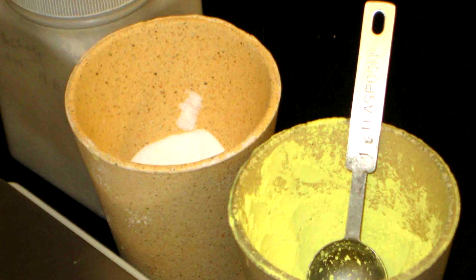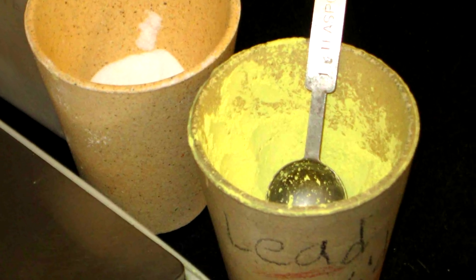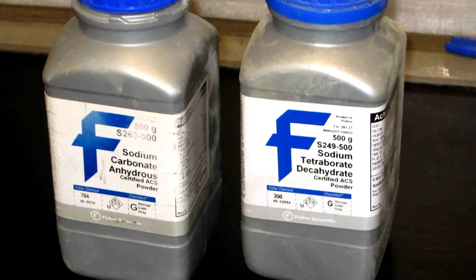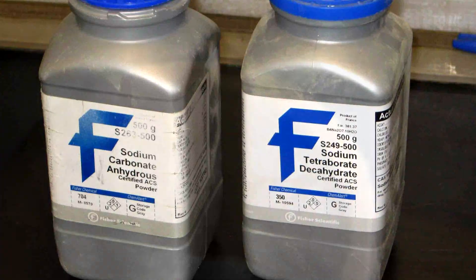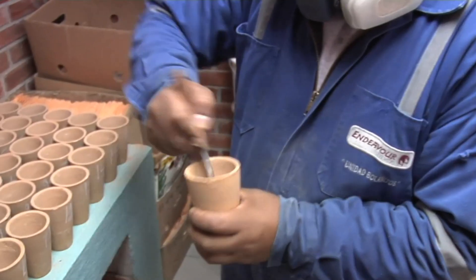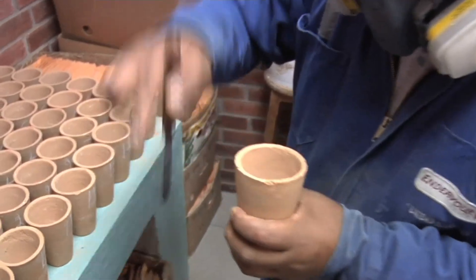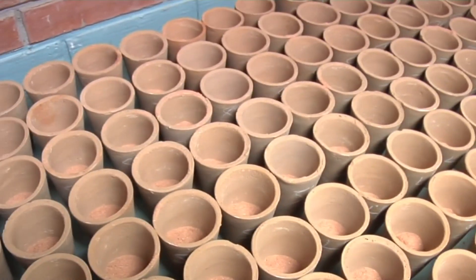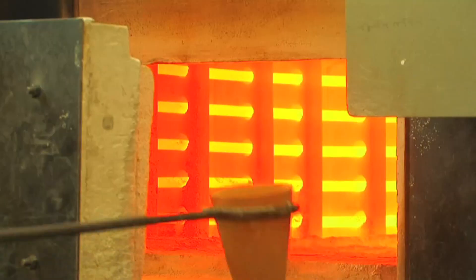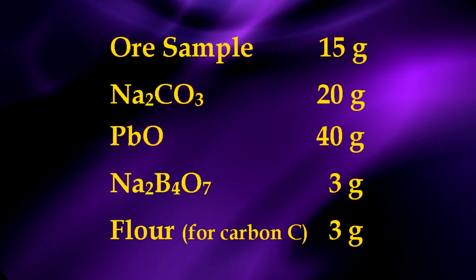The chemicals used in the fusion process each have a specific function. Activity and viscosity are the important chemical and physical properties of the slag. An example of a typical recipe or fire assay fusion charge for quartz-based ore is shown here.